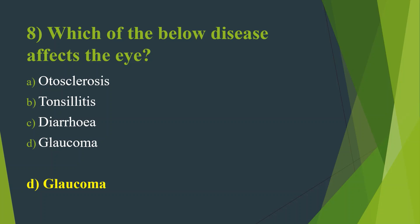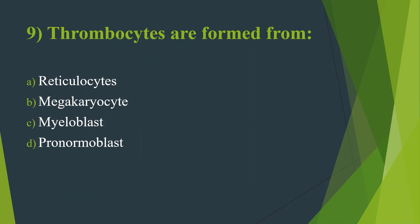Ninth question: Thrombocytes are formed from — Option A, Reticulocytes. Option B, Megakaryocyte. Option C, Myeloblast. Option D, Pronormoblast. Answer is Option B, Megakaryocyte.